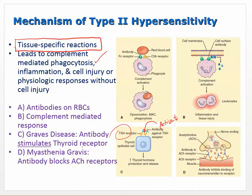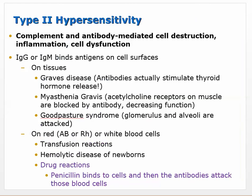Myasthenia gravis: antibodies attack acetylcholine receptors. Acetylcholine is the neurotransmitter that causes muscle contractions, so antibodies taking out some acetylcholine receptors causes perceived weakness. When you go to contract your muscles with fewer acetylcholine receptors, some muscle cells may not contract as expected. It's tissue specific - it happens wherever there are acetylcholine receptors, primarily in muscle.